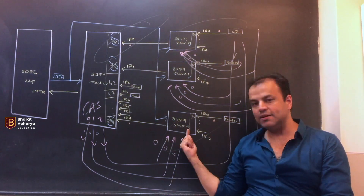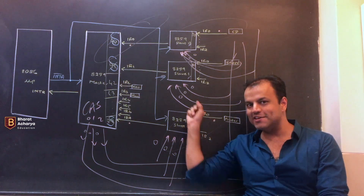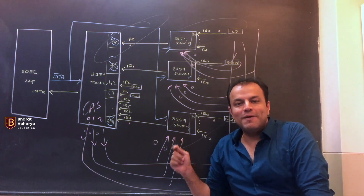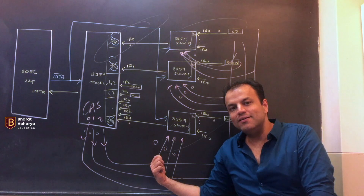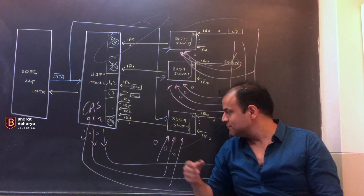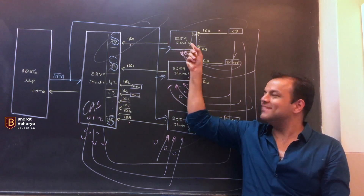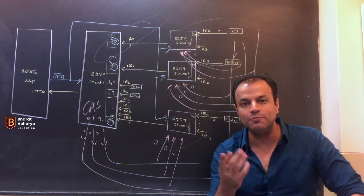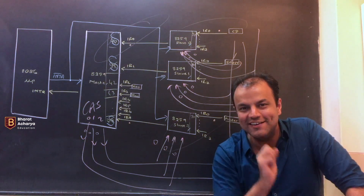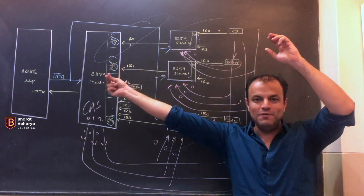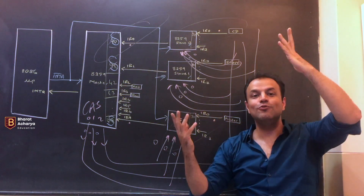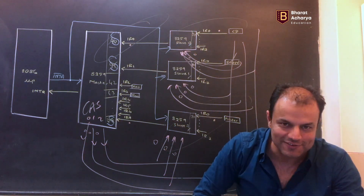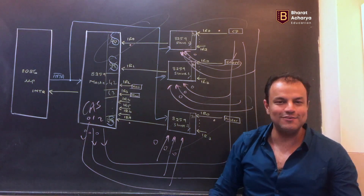This number 000 will go to all the slaves. All the slaves will look at this number. They all know their own identification number. This slave knows its number is 7, so it will look for the pattern 111. It will see the pattern is 000, compare the two, and realize - no, it's not me. The slave with number 0 will know - yes, it's me, my number is 000 and I'm seeing 000. This happens between the first and second INTA bar. The moment this identification happens, the CPU will issue the second INTA bar, which will also go to all. But by now the correct slave has been identified and it will give the vector number to the CPU.